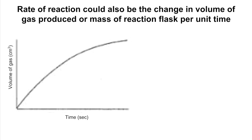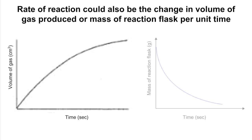So if a chemical reaction produces a gas, you could follow the rate of its production, and the graph would show an increase. And if the reaction was producing a gas and you allowed it to escape from the flask, then the mass of the flask would drop, and the graph would reflect that.